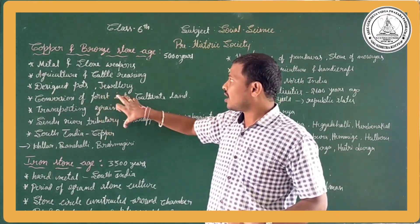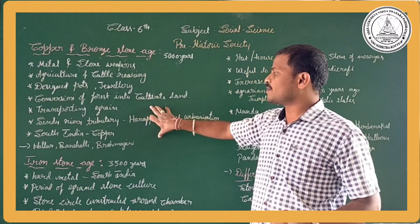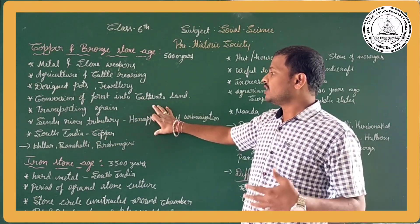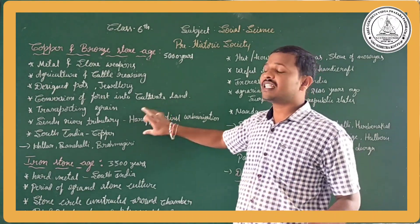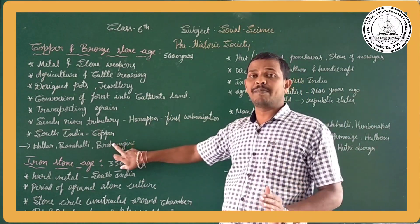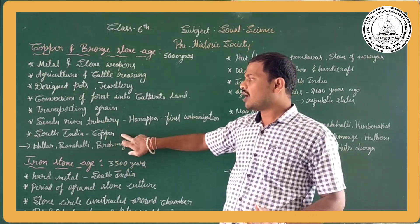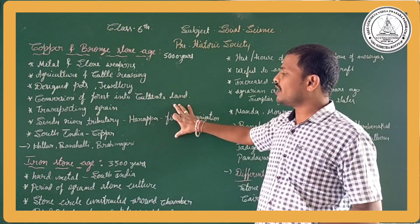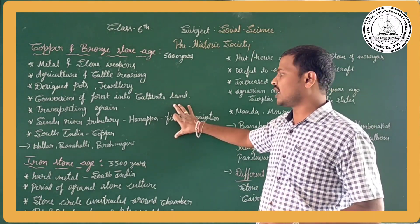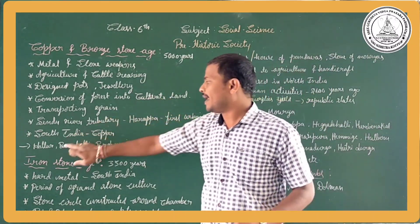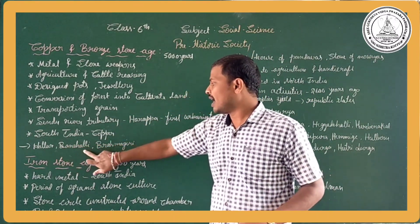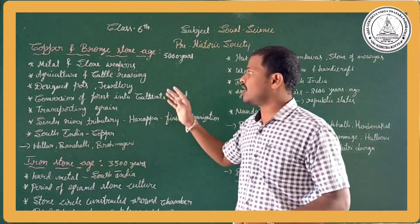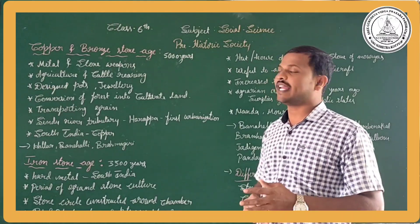In South India, the use of bronze was less than copper, so almost all South Indian people used copper. These copper-bronze-stone age sites we also got in Karnataka, at places like Aluru, Vanaharani, and Brahmagiri.